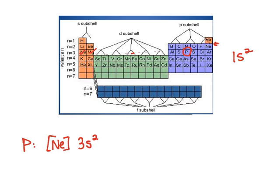Moving across, we hit a new color, so we start a new set. We're still in row 3. We are in the P subshell, and we hit 1, 2, 3 boxes along the way.